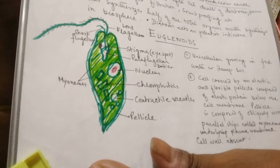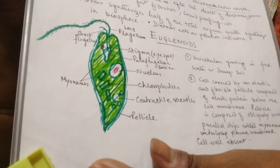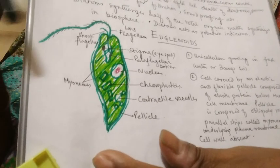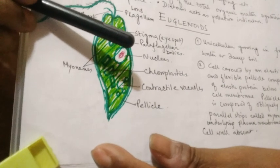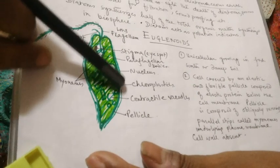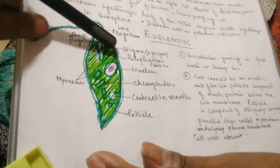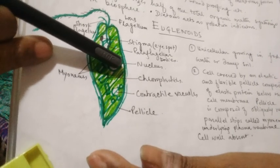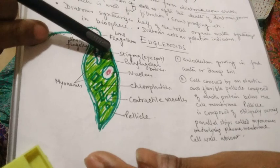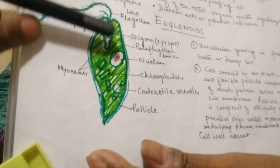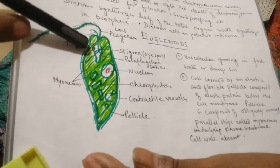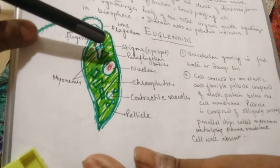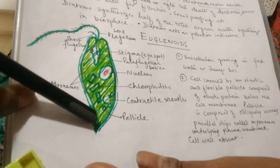Euglenoids are unicellular flagellated protists that generally reside in fresh water or in damp soil. Their body is more or less spindle-shaped, pointed towards the end with a broad middle area, and comparatively blunt at the anterior end. The body is covered with a fine covering called pellicle.